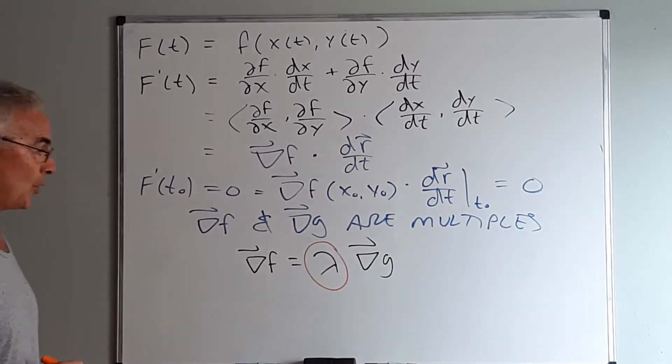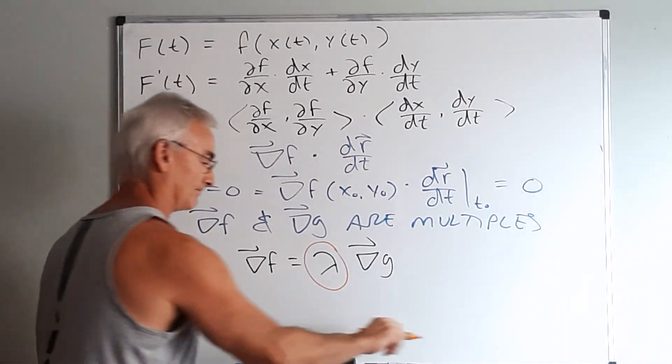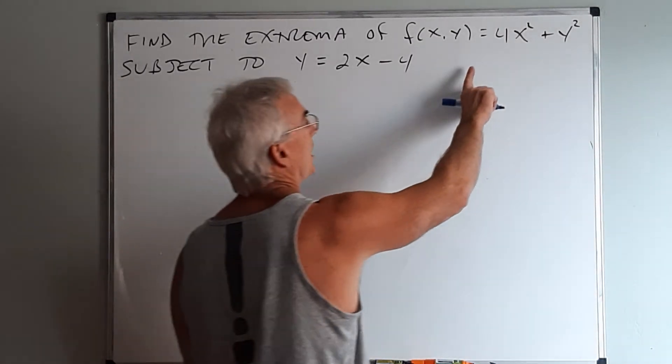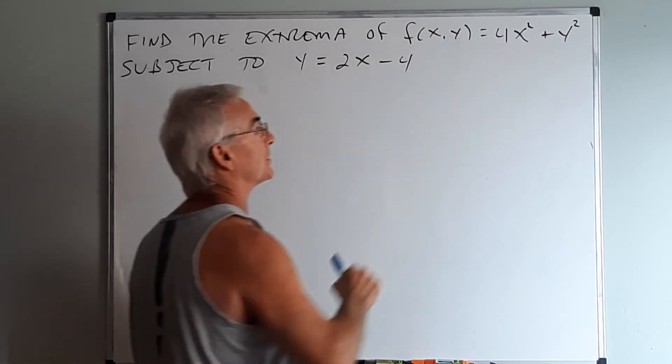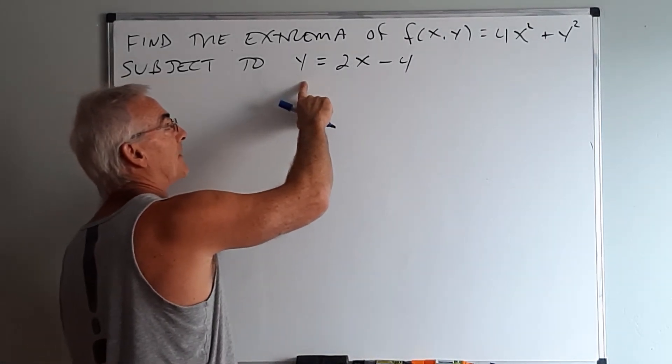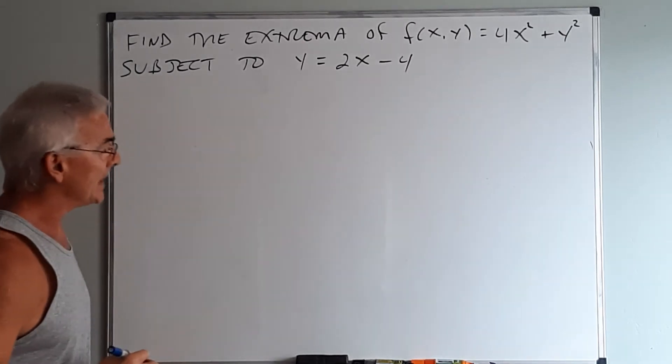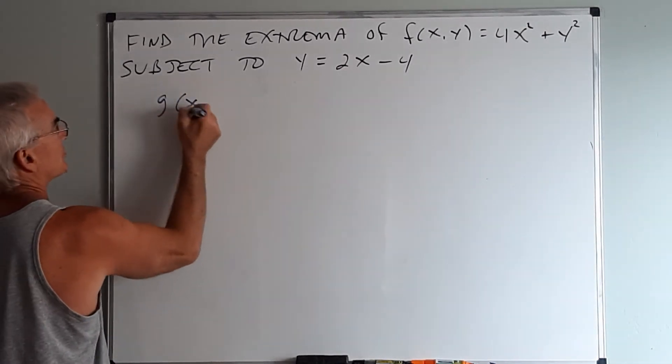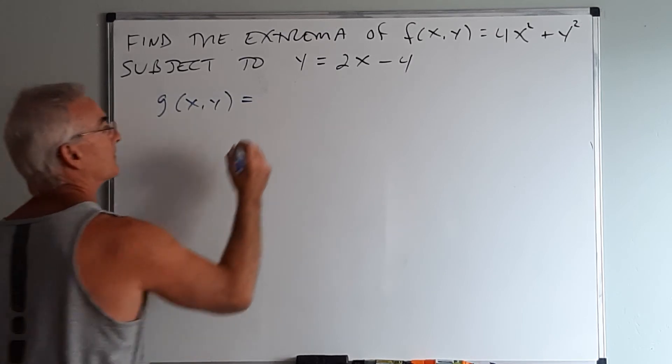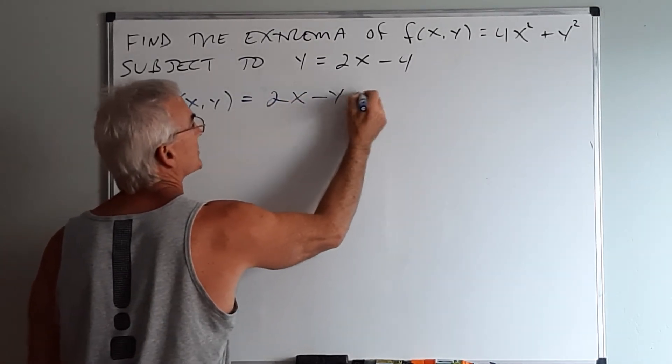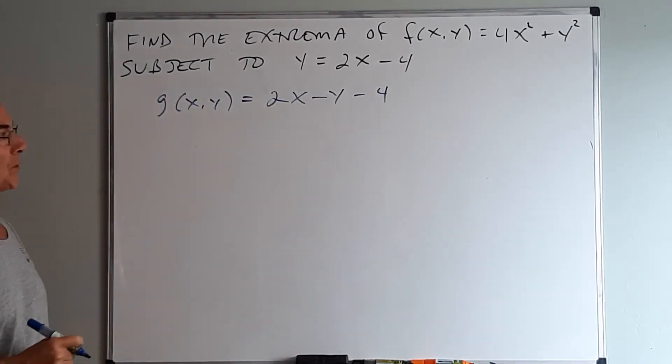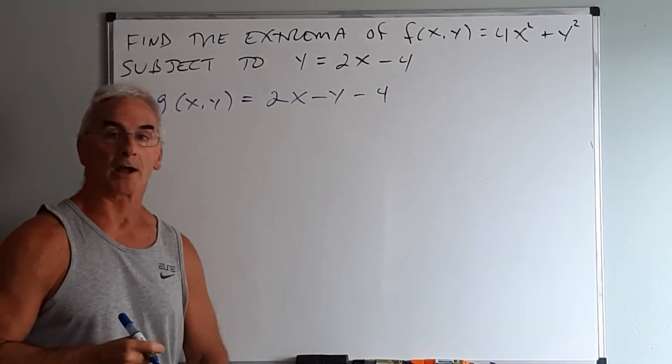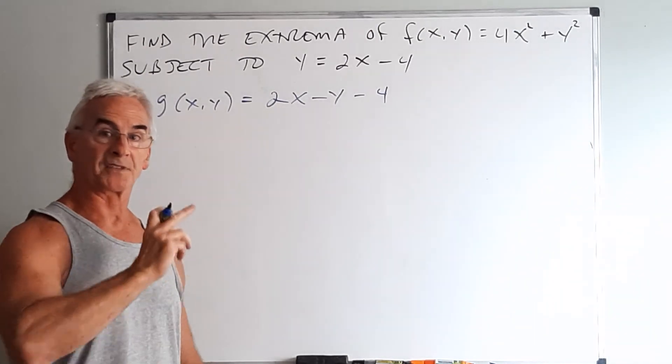I would like to find the extrema of this function right here f of xy equals 4x squared plus y squared subject to the constraint that every point must be on this line. Now subject to the constraint means I need to create my g of xy equal to zero so that's a fairly simple notion. I just throw everything on the same side of the equality so we'll make that 2x minus y minus 4. Now we don't know if we're going to get a maximum a minimum or both. But one of the nice things about a Lagrange multiplier is all extrema are absolute because they have to satisfy a constraint.